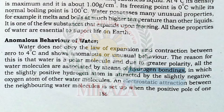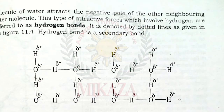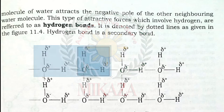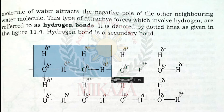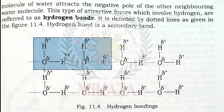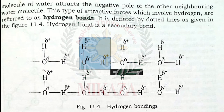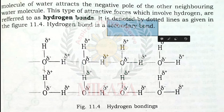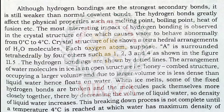An electrostatic attraction between neighboring water molecules is set up when the positive pole of one water molecule attracts the negative pole of another. This attractive force involving hydrogen is referred to as a hydrogen bond, shown by dotted lines in figure 11.4. Within a single water molecule, the H–O bond is a polar covalent bond, while the bond between hydrogen of one molecule and oxygen of another is the hydrogen bond — a secondary bond between two different molecules. Although hydrogen bonds are the strongest secondary bonds, they are still weaker than normal covalent bonds.